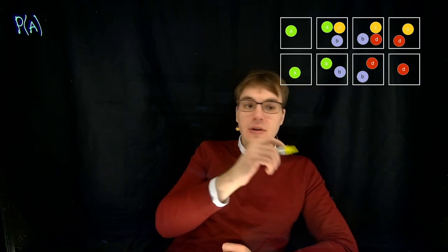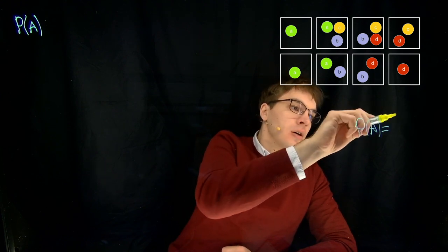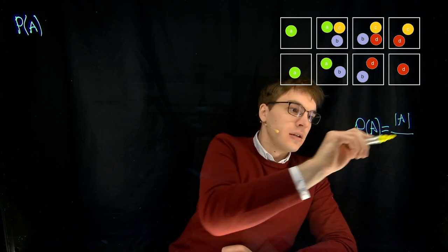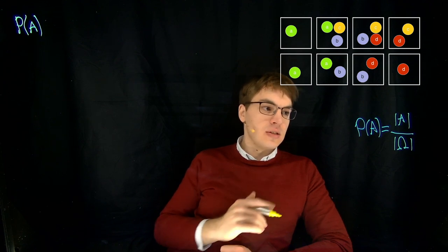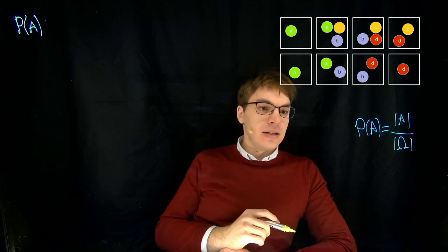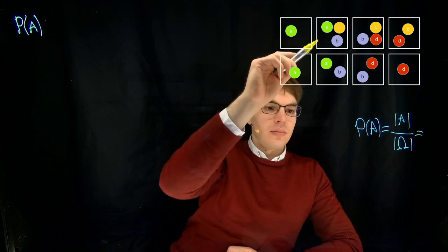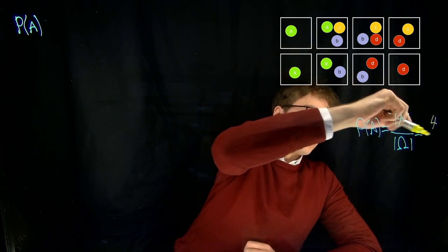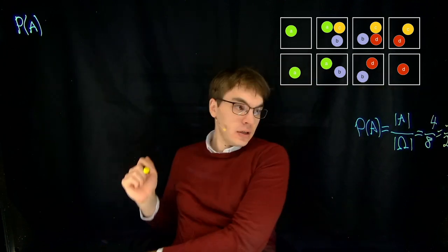So let's have a look at the definition. By definition this is the cardinality of our event set divided by the cardinality of omega, which is eight in this case because we have eight boxes, and the cardinality of A is four because we have four boxes that fulfill our definition. So we have one half.